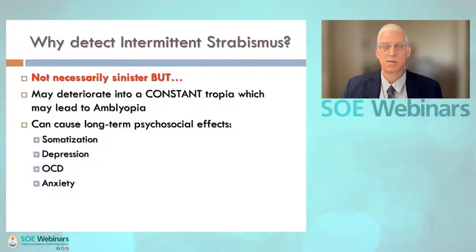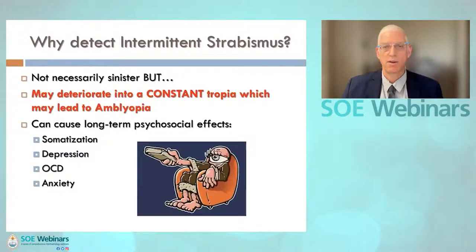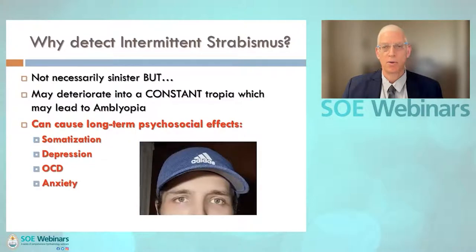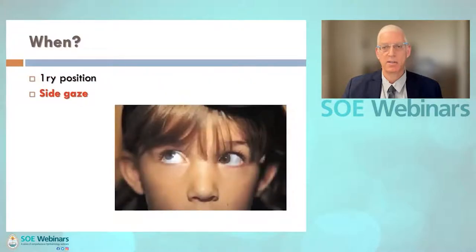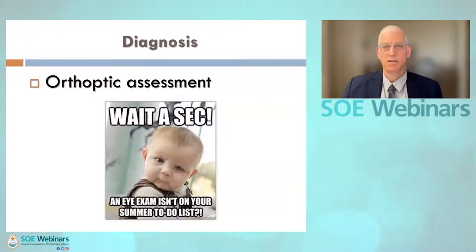Intermittent strabismus is not necessarily sinister. Some types, however, may deteriorate to a constant tropia, which can induce a lazy eye if it occurs during the first years of life. The tropia or amblyopia may induce social rejection and lead to low self-esteem, with long-term psychological implications. Intermittent strabismus may occur occasionally in primary position when the subject is tired or daydreams, or it may manifest on side gazes. Please refer anyone, especially a child with suspected intermittent strabismus, to a pediatric ophthalmology unit for a full orthoptic assessment.